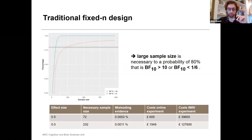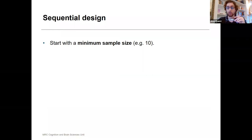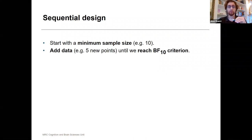I'm offering a solution for this dilemma, and that's sequential designs. The way that works: you start with a minimum sample size of, let's say, 10, and you run your statistics. You investigate what's the Bayes factor now. If it's already above or below your criterion that you've set in your registration, then you immediately stop.